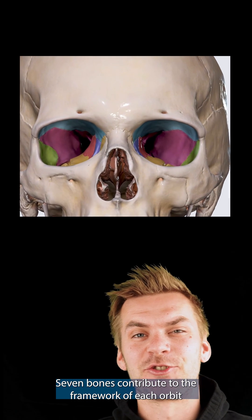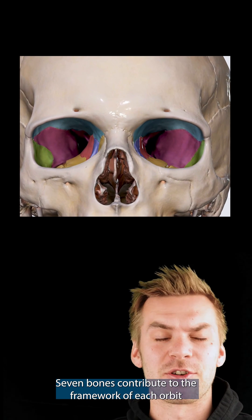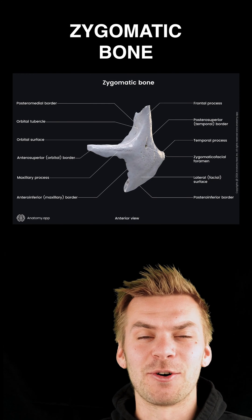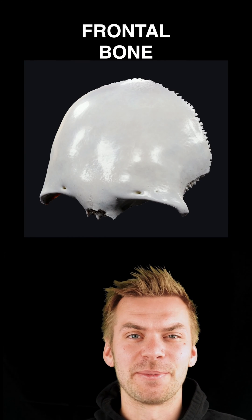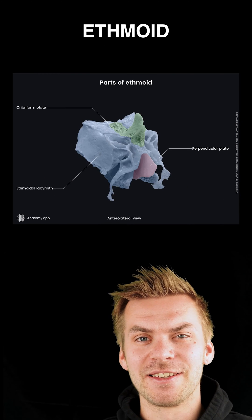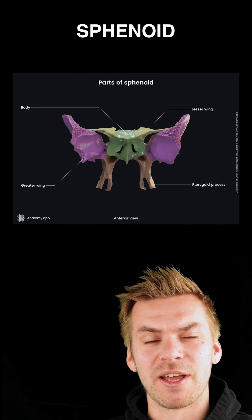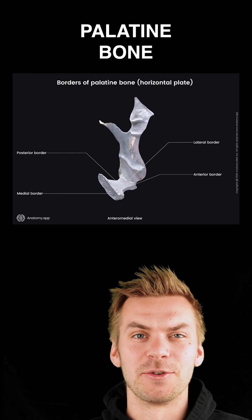Seven bones contribute to the framework of each orbit: maxilla, zygomatic bone, frontal bone, ethmoid, lacrimal bone, sphenoid bone, and palatine bone.